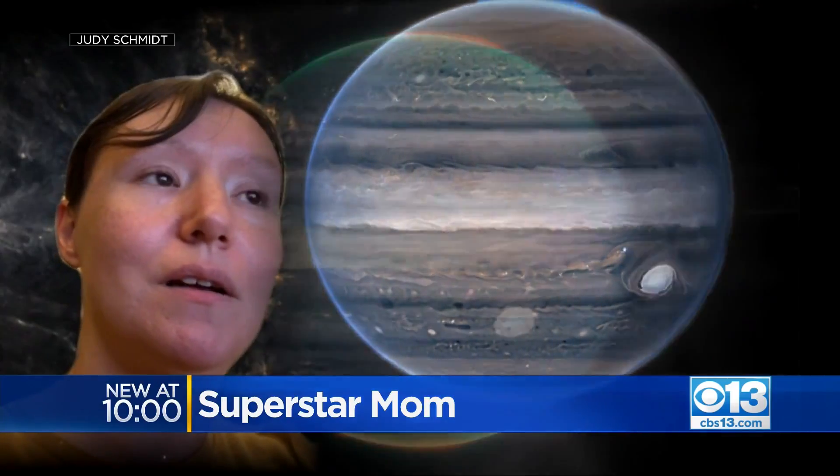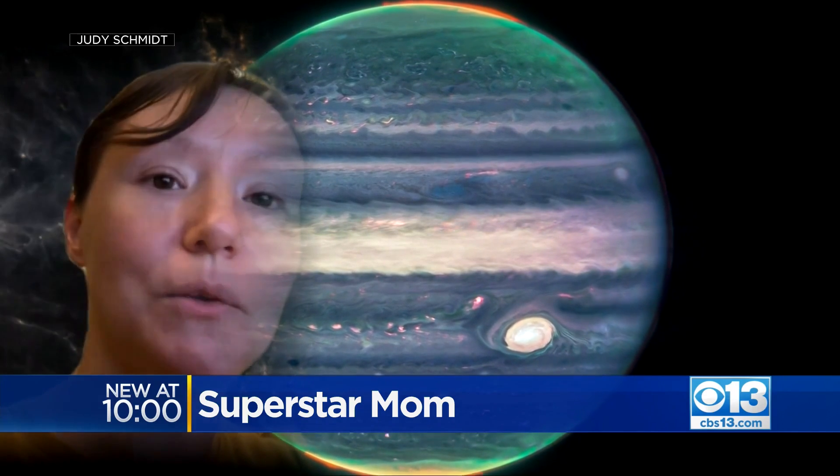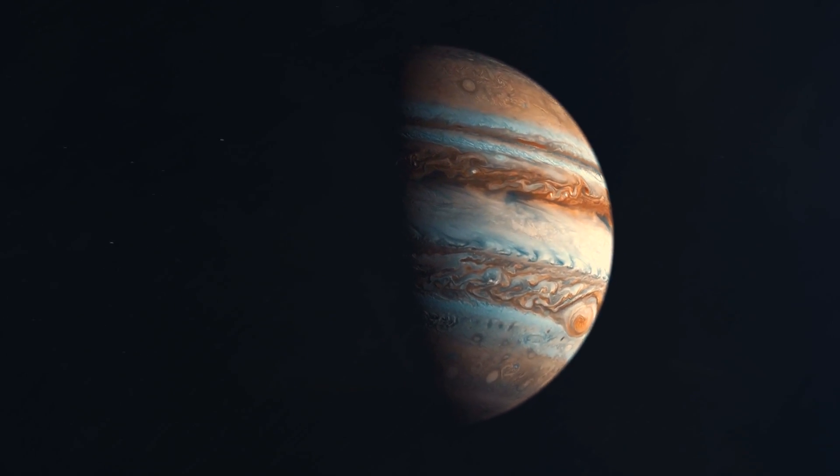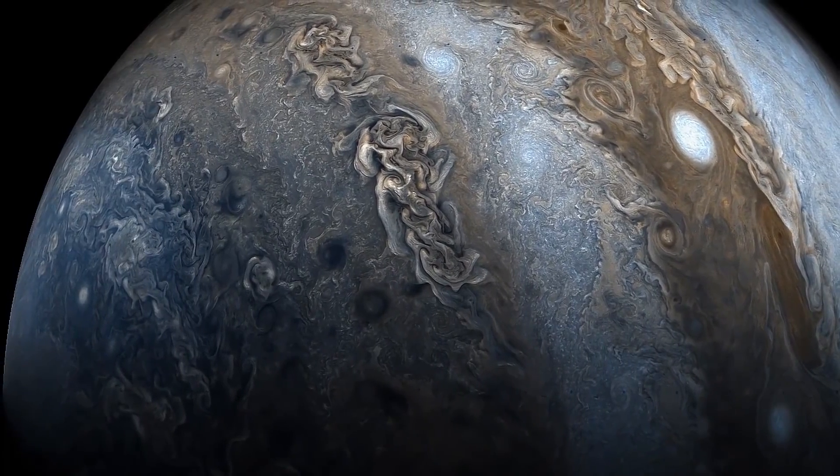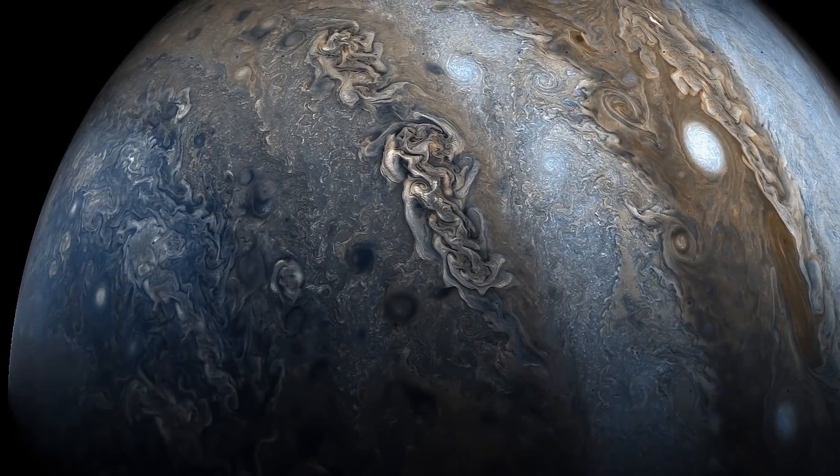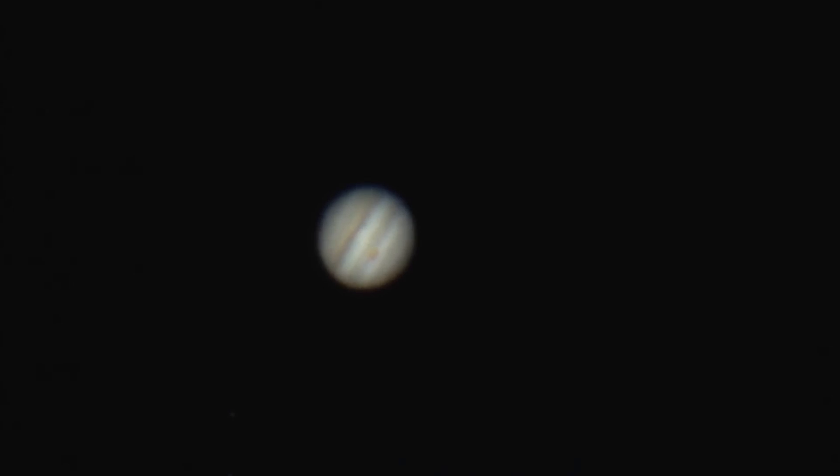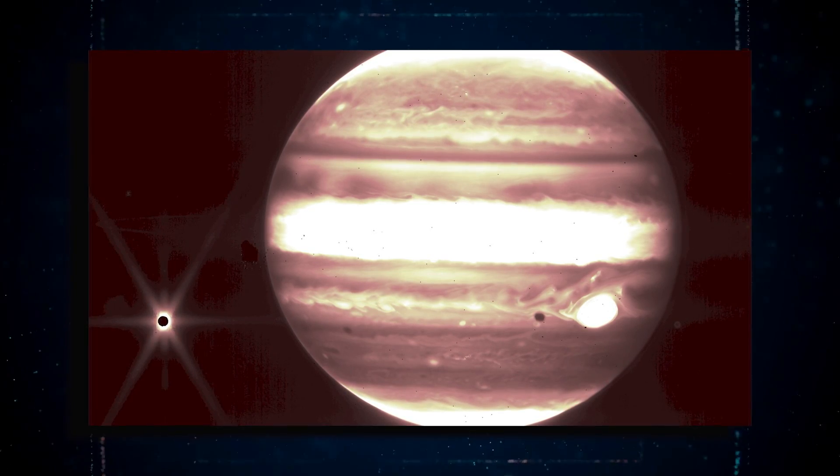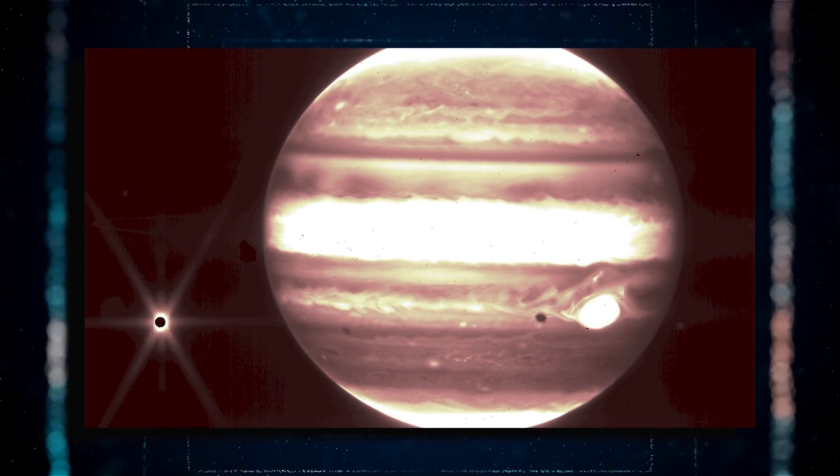Schmidt claims that because Jupiter spins so rapidly, it is more difficult to deal with than more distant celestial mysteries. Furthermore, if Jupiter's distinguishing features have rotated since the images were captured and are no longer aligned, it might be challenging to merge a stack of images into a single perspective. In order to arrange images coherently, she must occasionally make digital changes.